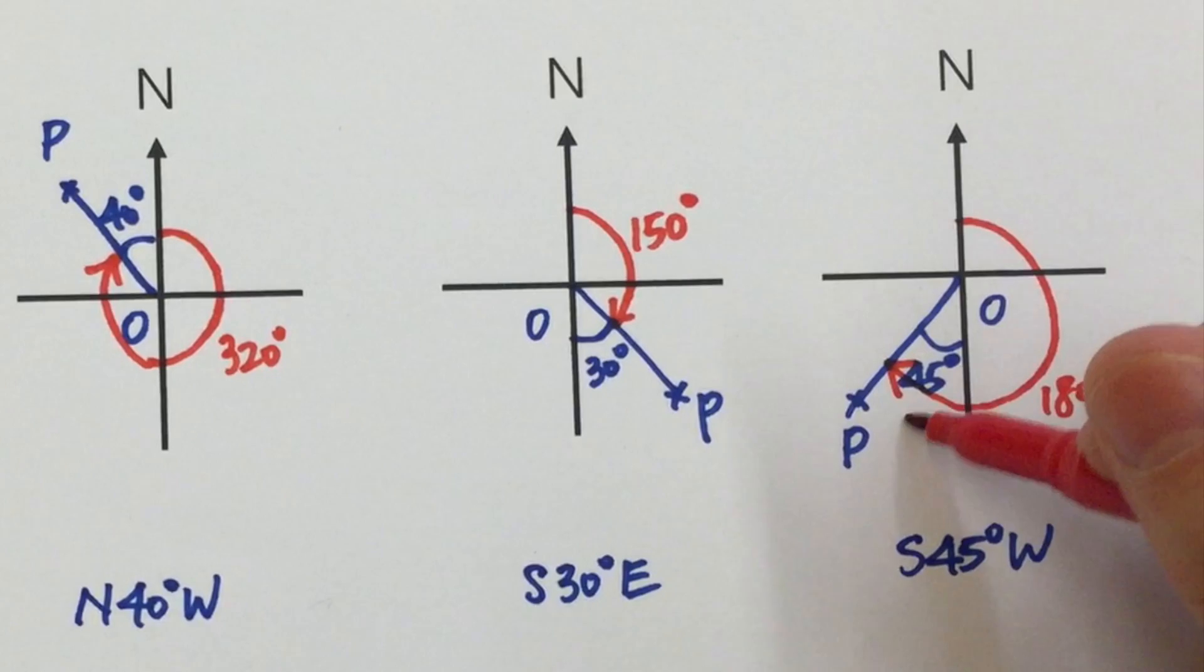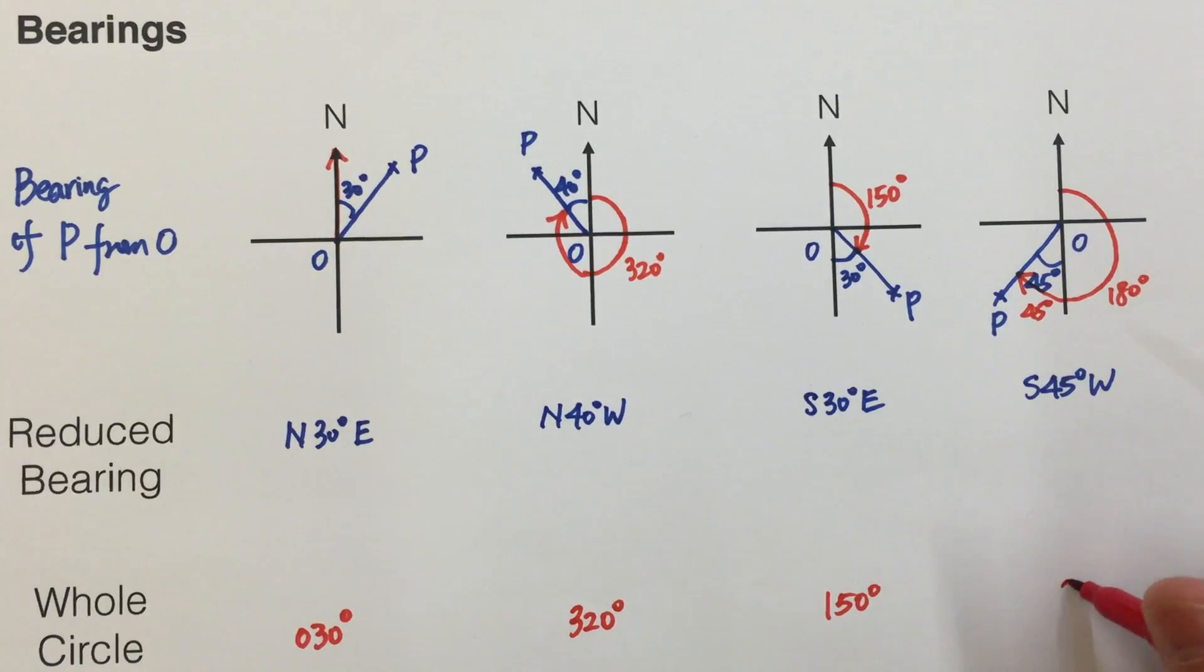180 plus 45, we have 225 degrees. So these are the whole circle bearings of P from O.